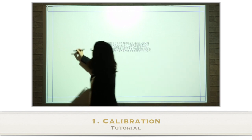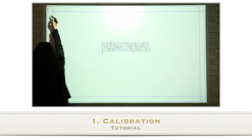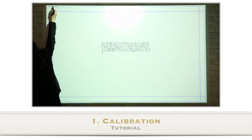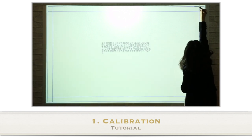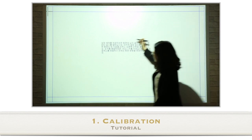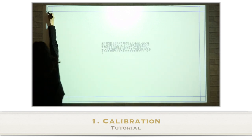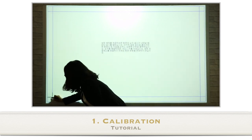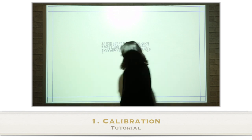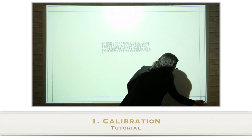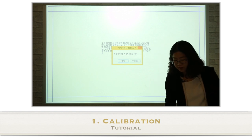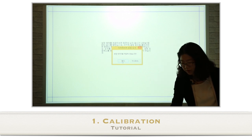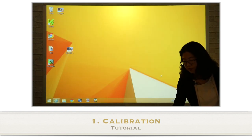The screen will automatically change to the calibration process, and you will see a crossbar mark at the upper left of the screen. Touch the middle of the crossbar with the digital pen and keep following it. Finally, click OK to finish the calibration.